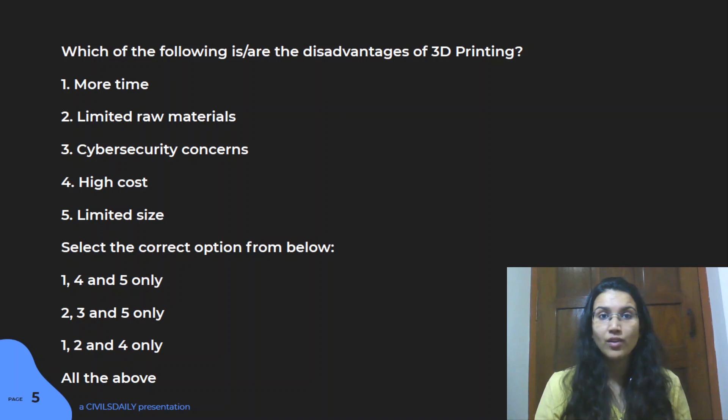Sometimes if you know the right option, you don't have to go through each and every option. But let's look into it. Second is limited raw material—that is right, it is in fact one of the disadvantages. You have certain polyester-related materials used for 3D printing, certain metals are also used, but they are limited in scope. Cybersecurity concern—obviously it's online, so that kind of issue will come here. High cost? No, it will not have high cost. In fact, when we have it as a replacement for other production-related things, it's not going to have high cost.